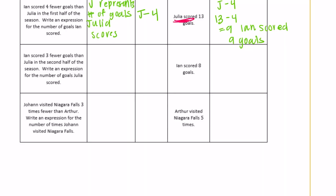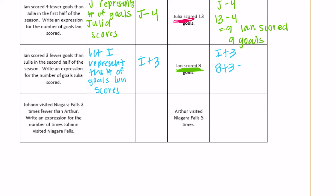Ian scored three fewer goals than Julia in the second half of the season. Write an expression for the number of goals Julia scored. This time Ian scored eight goals, so let I represent the number of goals Ian scores. Ian scored three fewer than Julia, so we add three to get Julia: I plus 3. Eight plus 3 equals 11, so Julia scored eleven goals in the second half.